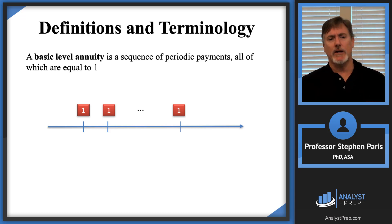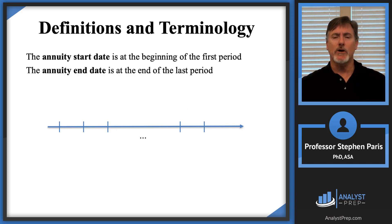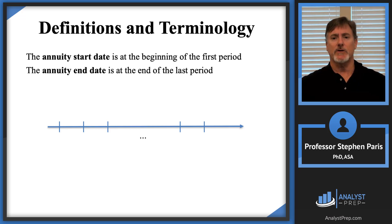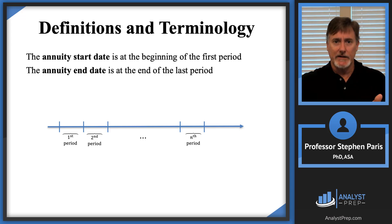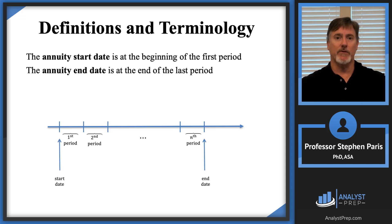Now let's get into some more definitions. The annuity start date is at the beginning of the first period, and the annuity end date is the end of the last period. You need to identify what the first period is to know the annuity start date, and likewise identify the last period to know the annuity end date.